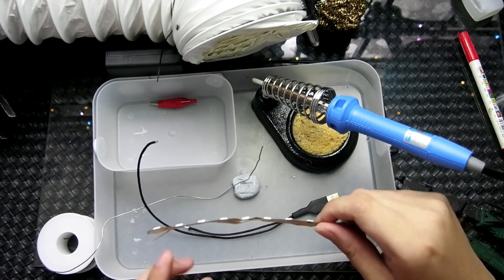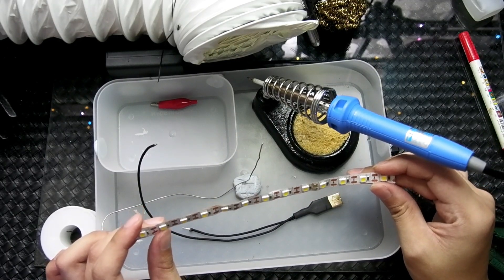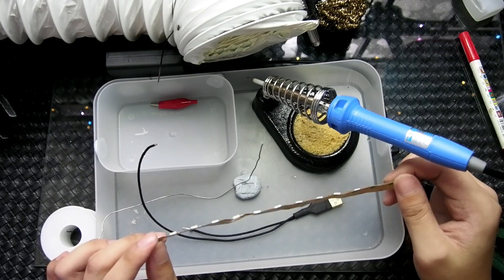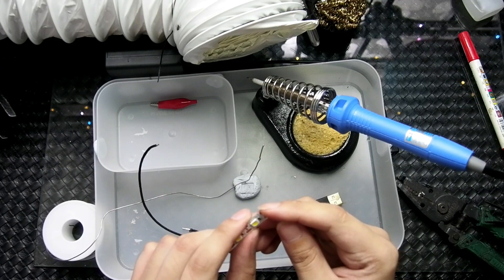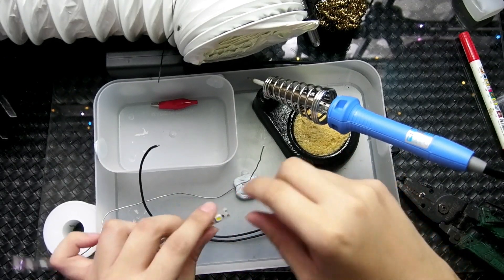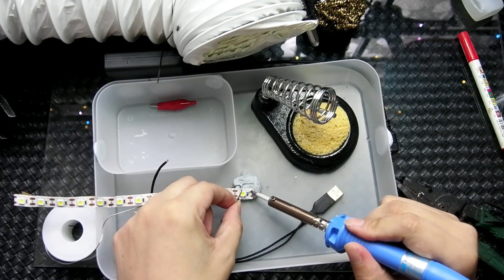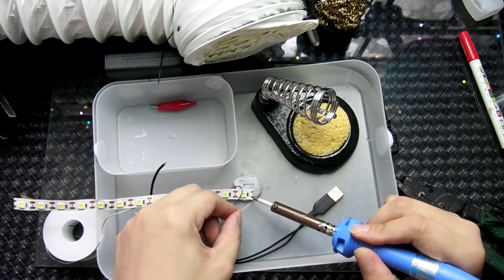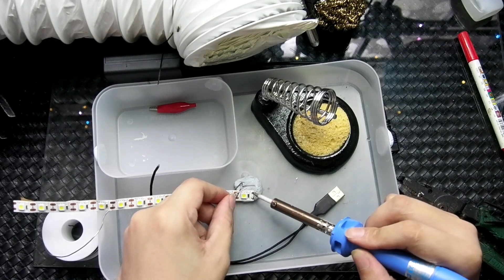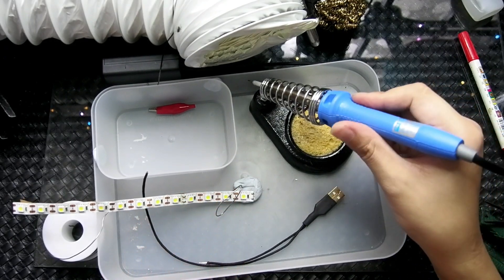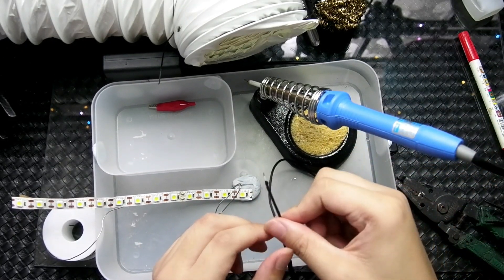So we now have this LED strip. These are 5 volts LED strips. They run on USB or battery power. There are indicators here, the positive and the negative. So we are going to tin that.